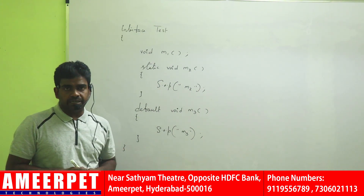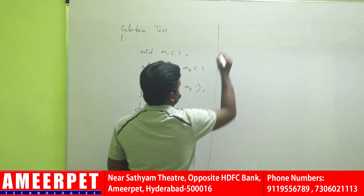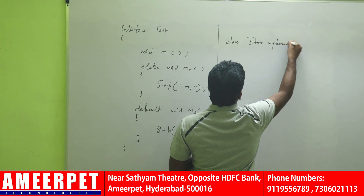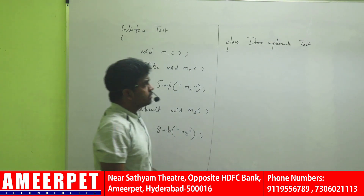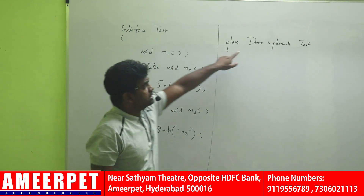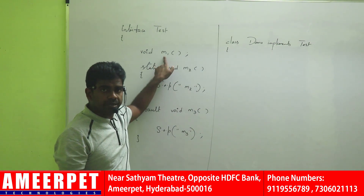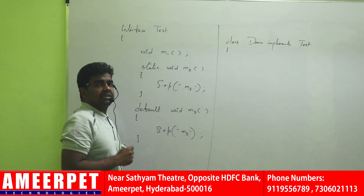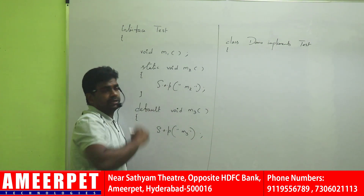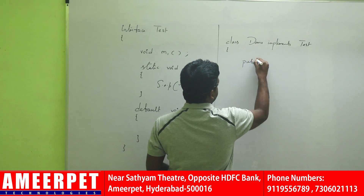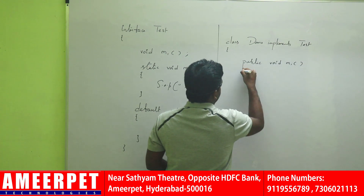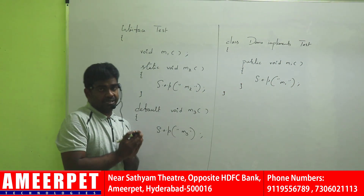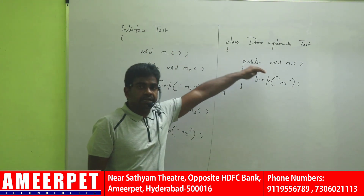But how can we use the functionality of that interface? Every interface is implemented by a class. Let me take one class — suppose the demo class, which is implementing the interface called test. Whatever is implemented from the interface, we need to override all the specifications — nothing but the abstract methods. Here M1 is an abstract method with no body, so we have to provide the body. Since M1 is public and abstract by default, we need to override it as public void M1. All abstract methods present inside the interface must be overridden in the implementing class.